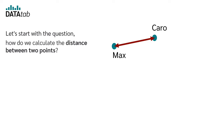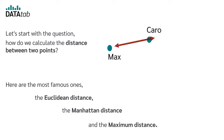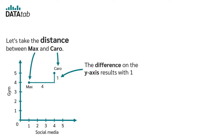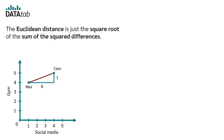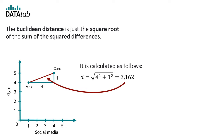How do we calculate the distance between two points? Here are the most famous ones: the Euclidean distance, the Manhattan distance, and the maximum distance. Let's take the distance between Max and Caro. The difference on the y-axis is 1 and the difference on the x-axis is 4. The Euclidean distance is the square root of the sum of the squared differences, calculated as the square root of 4² plus 1², which is 3.162.